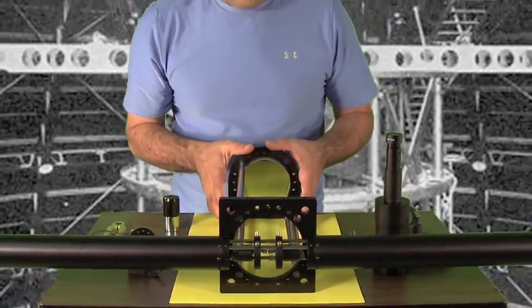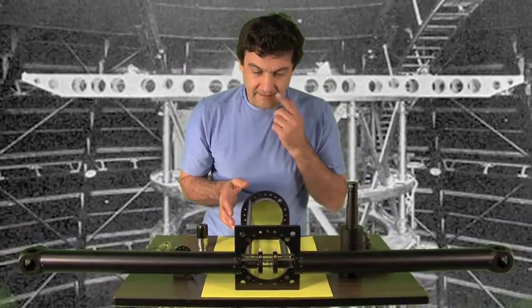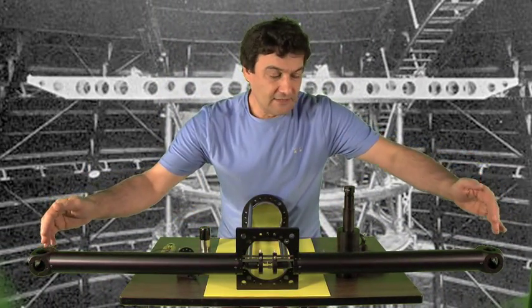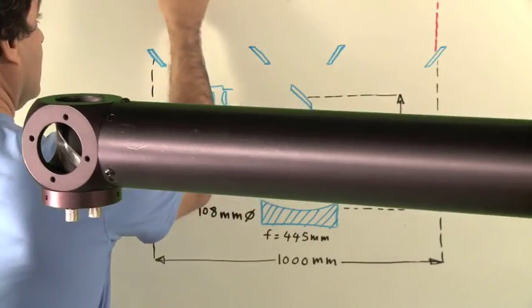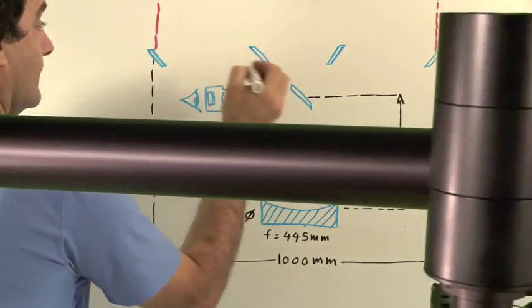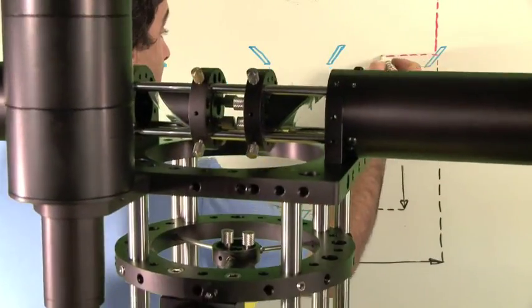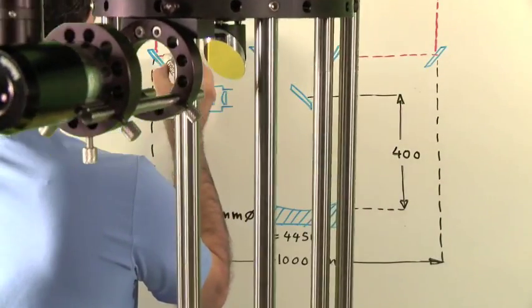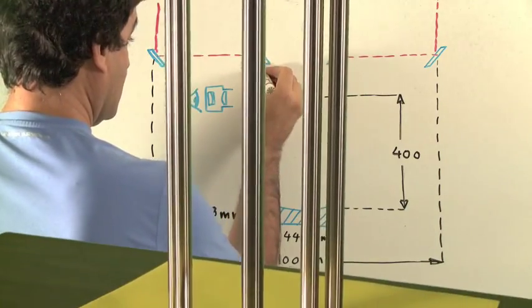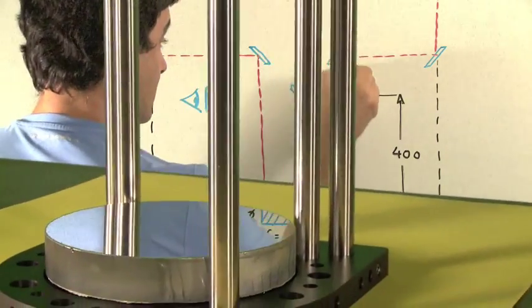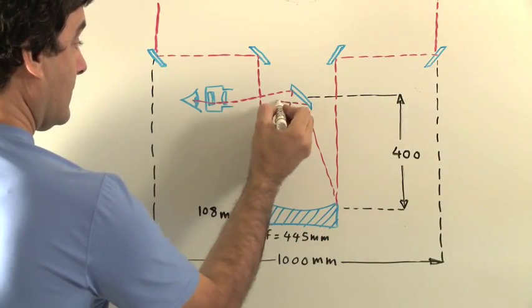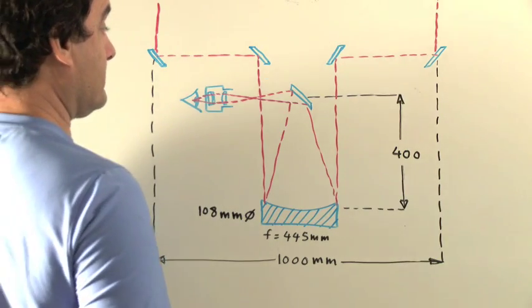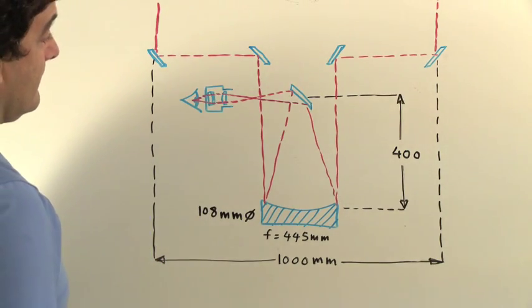This is a Newtonian telescope at the center. There are two fold mirrors here and two fold mirrors here. The starlight comes in, hits these two fold mirrors one meter apart, reflects into these mirrors, then folds and hits the primary mirror at two points. It's focused to the secondary, which is brought back up to be focused on the ocular.